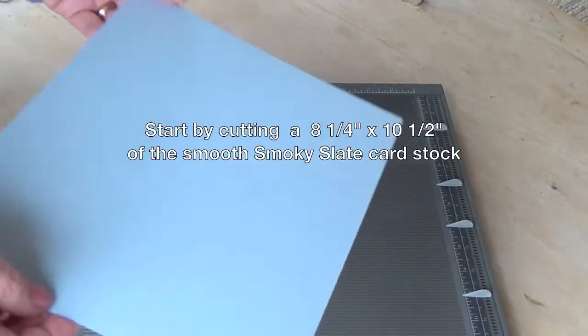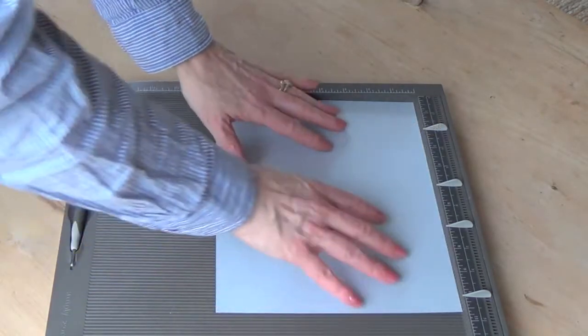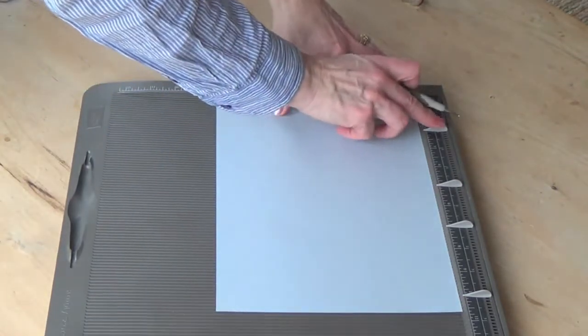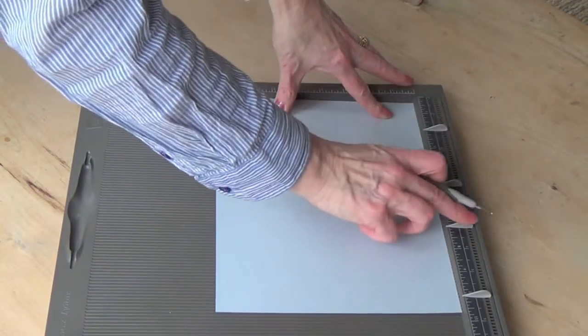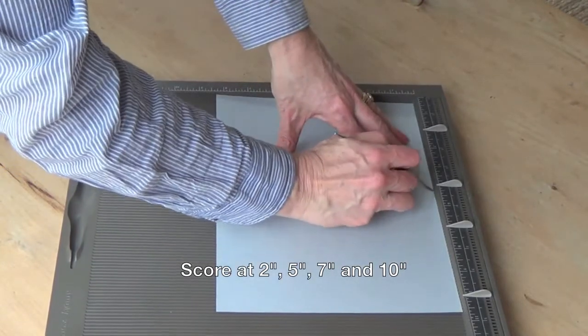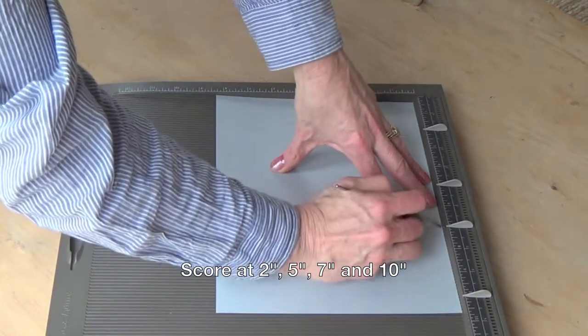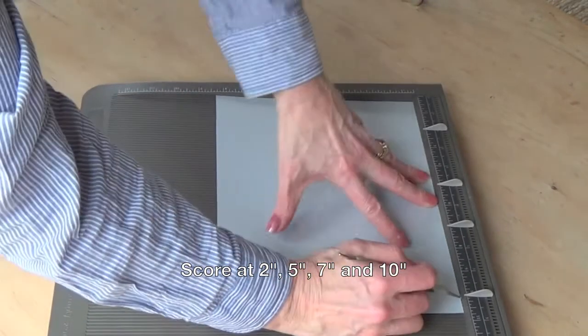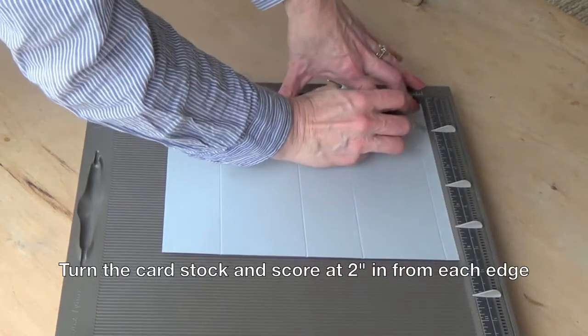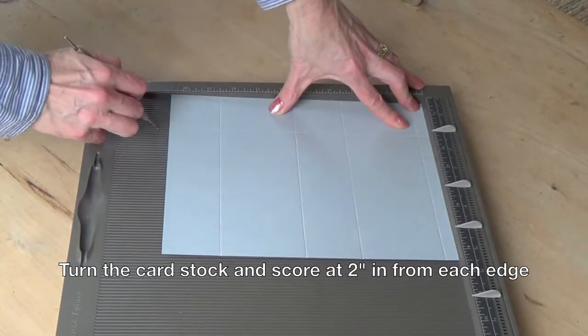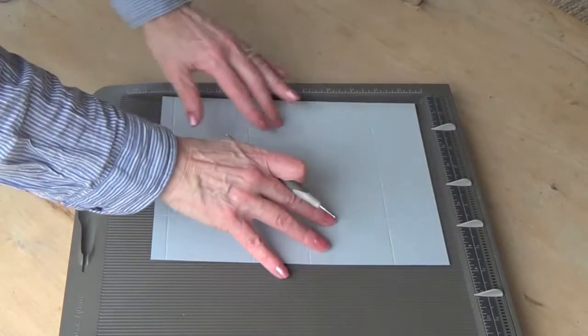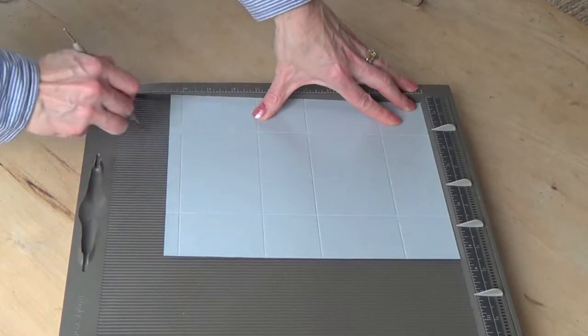To make the box, you'll first need to use your simply scored tool to score. I've placed my useful markers exactly where I need to score and that's 2 inches, 5 inches, 7 inches and 10 inches and then we want to score 2 inches in from each side. So that's in from the left, turn it round and then 2 inches in from the left again.